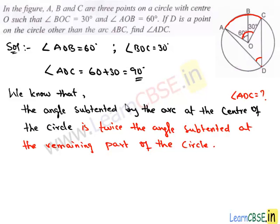And here we know that the angle subtended by the arc at the center, which is angle AOC, is twice the angle subtended by the same arc on the remaining part of the circle, that is angle ADC.